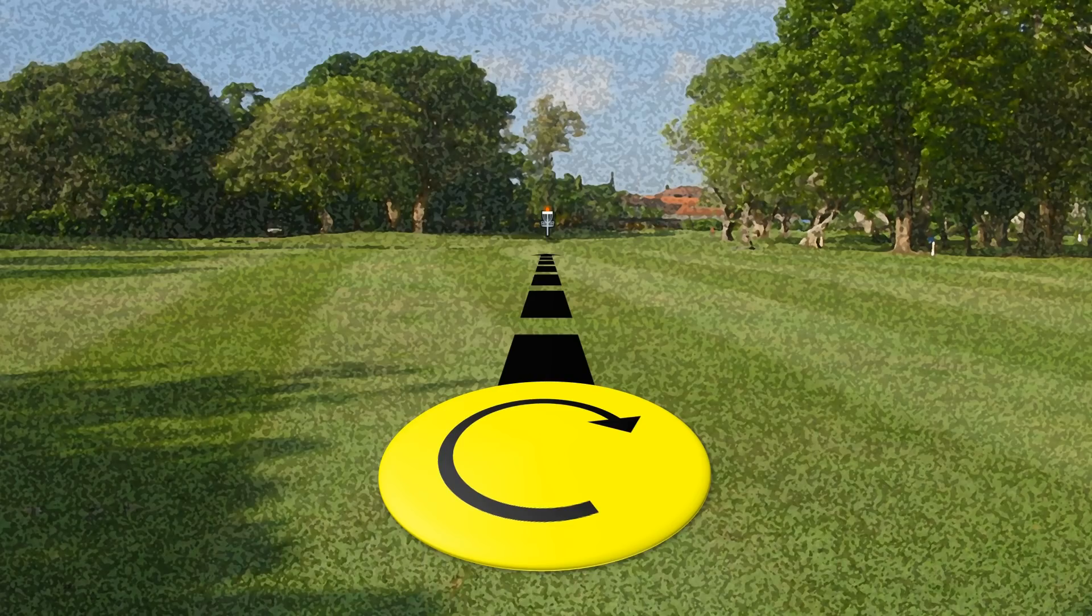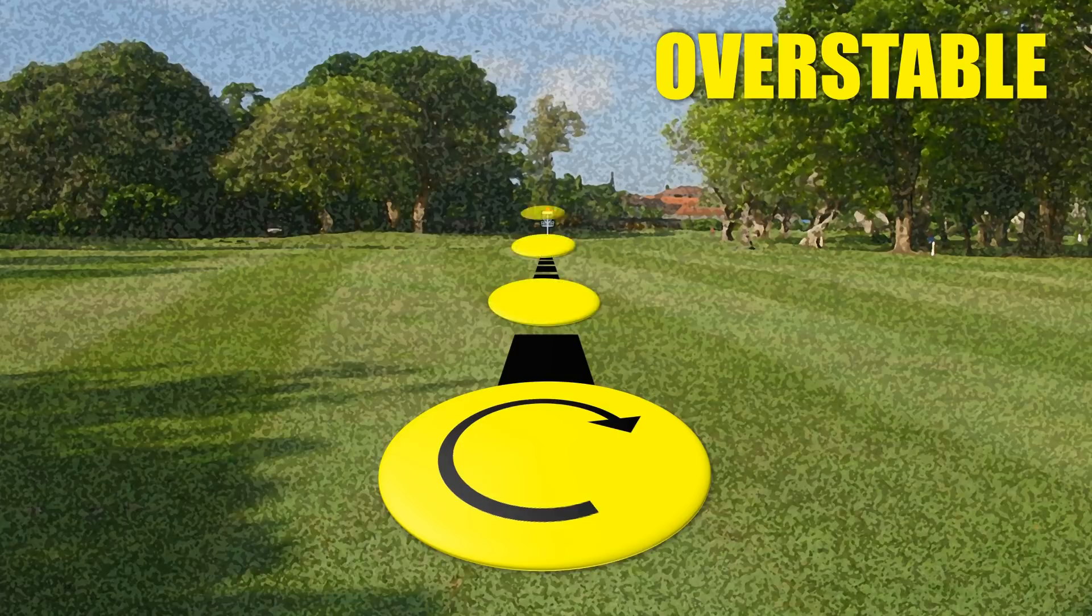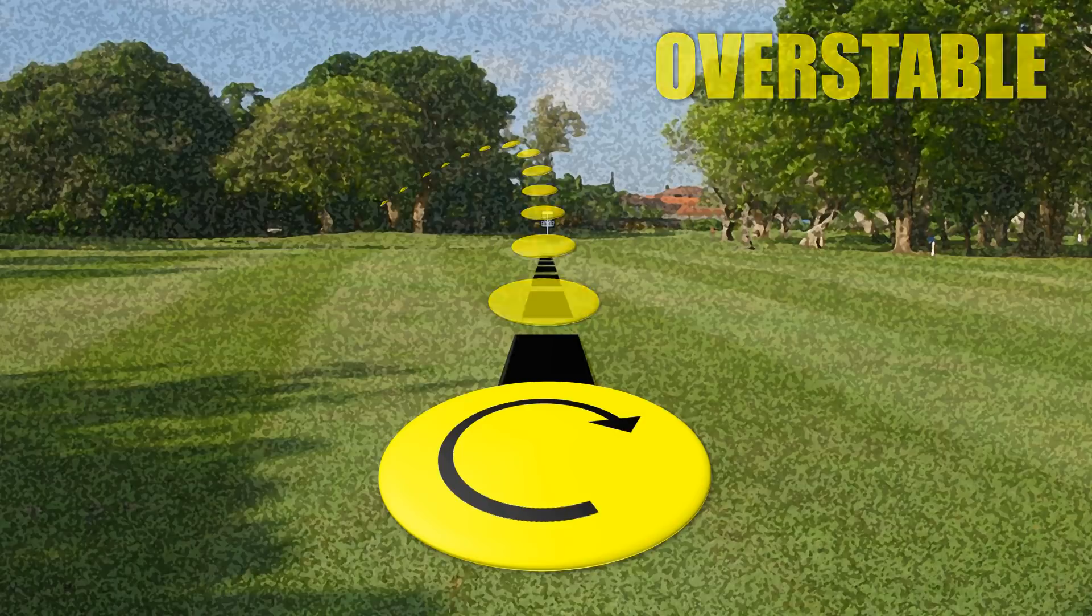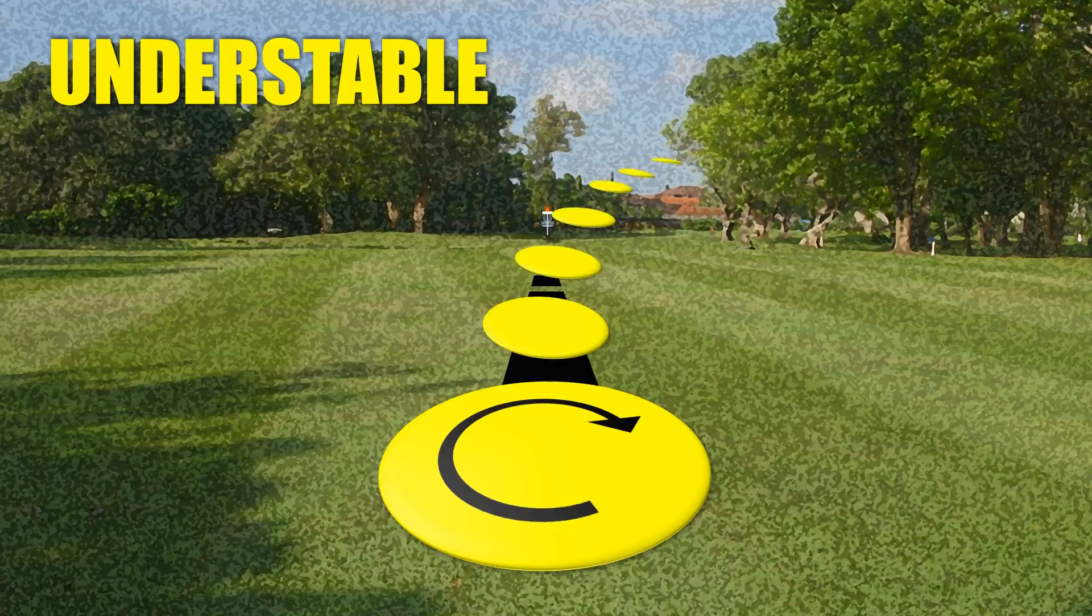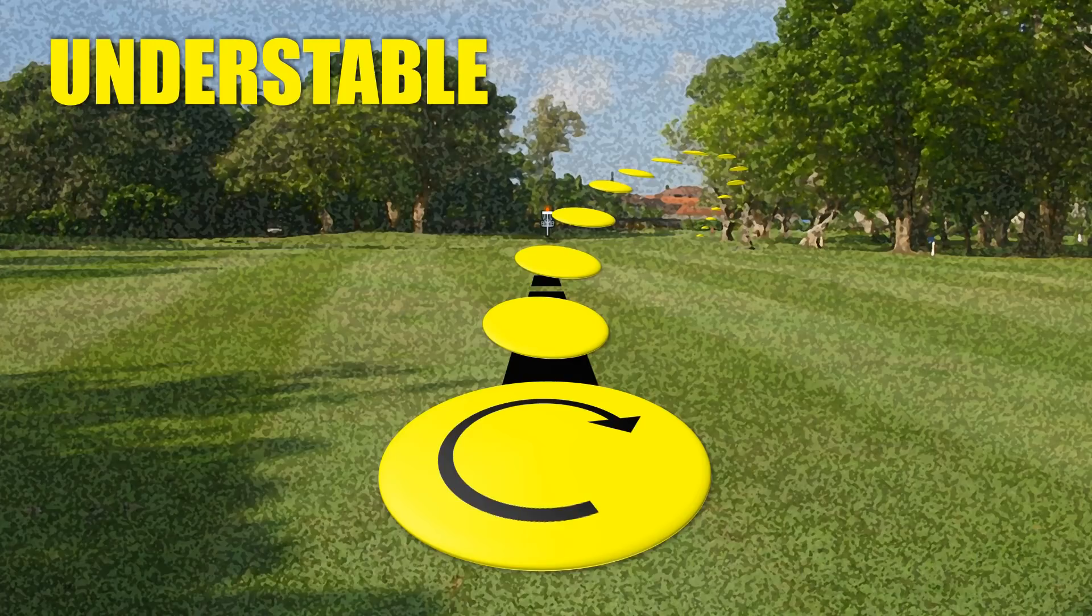The first key flight pattern is an overstable flight and this is where the disc begins to pull hard to the left almost immediately upon release. The second and opposite pattern is the understable flight pattern where the disc turns over almost immediately headed right before finishing mostly straight or possibly coming back slightly to the left.